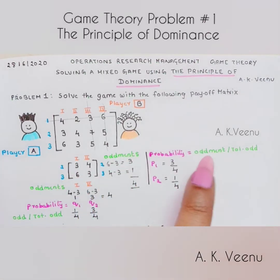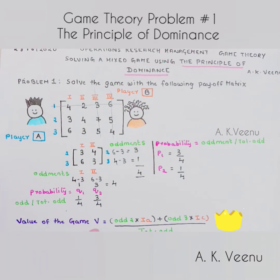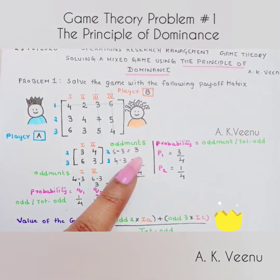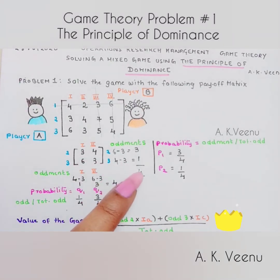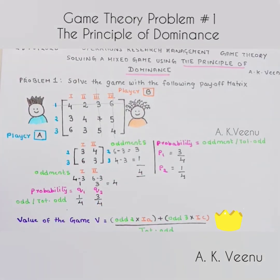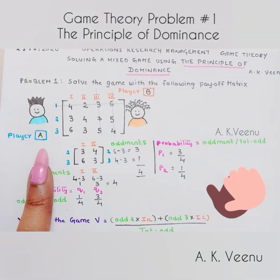Using the oddments, we found the probabilities — the formula is oddment divided by total oddment. We found the value of the game by multiplying the oddments into the first column elements, adding them up, and dividing by the total oddment. When the value of V is positive, the game is said to be favorable to player A.